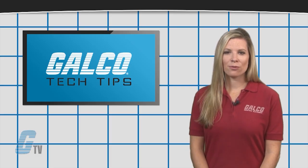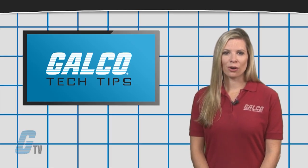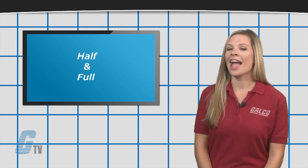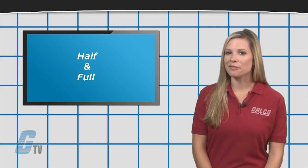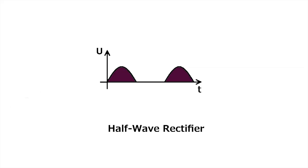A couple types of rectification are half wave and full wave. A half wave rectifier takes only one part of the AC sine wave and rectifies it into DC power, which usually results in lower voltage and more ripple.